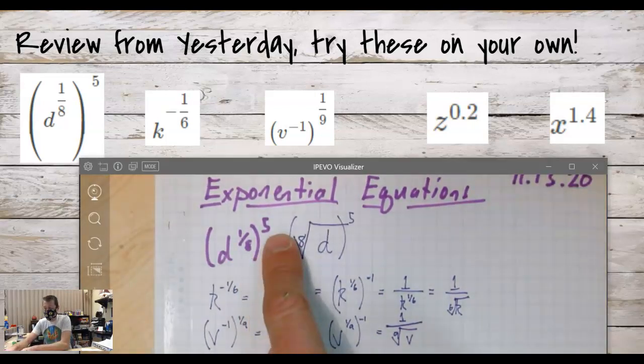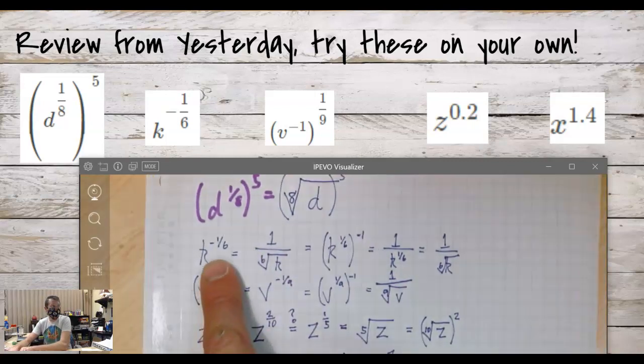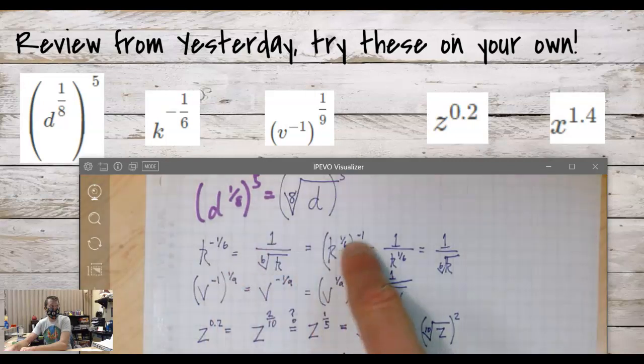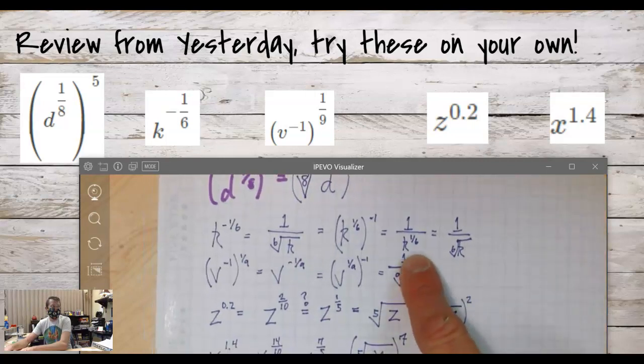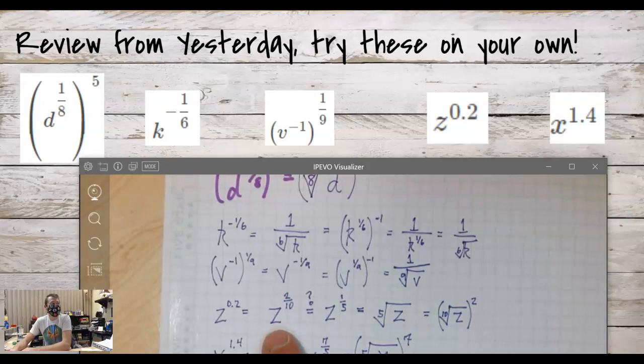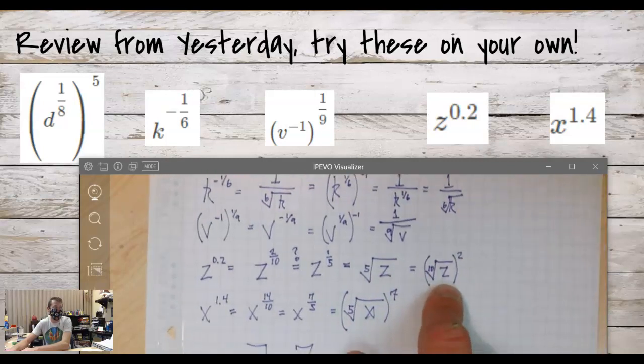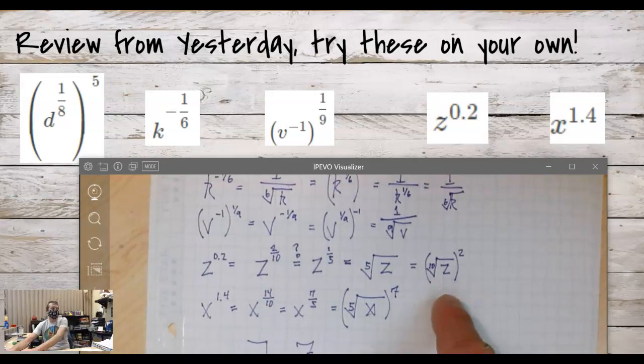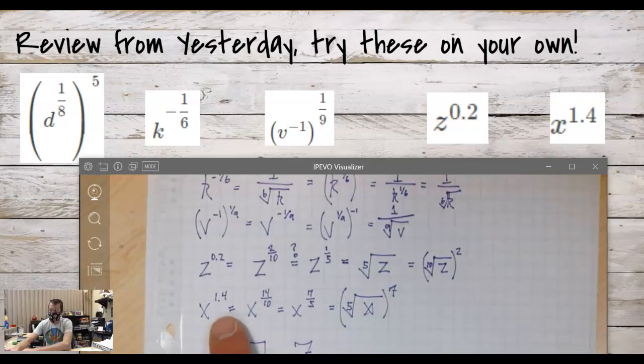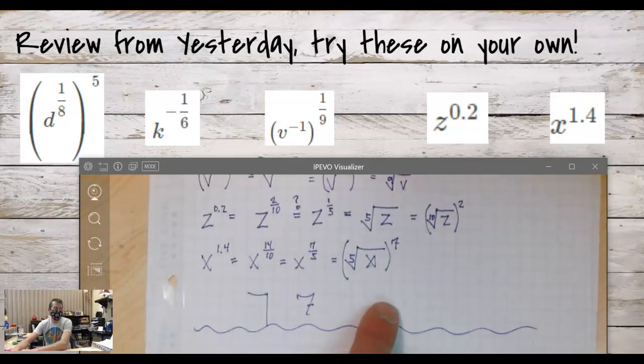So d to the one-eighth to the fifth comes out to be the eighth root of d to the fifth. k to the negative one-sixth, we said it might be this, and then we broke it up to look at is it for sure one over the sixth root of k, and it is. Similarly, the next one comes out to be one over the ninth root of v. We tested a value for z to see is z to the two-tenth equal to z to the one-fifth, and it is. So we said that's allowed to be the fifth root of z. And then any decimal value that is greater than one, we can write as an improper fraction and deal with it that way. And then I got made fun of for how I make my sevens and had to defend myself, and that was that.